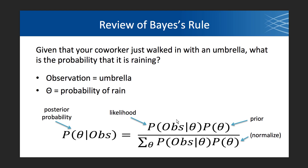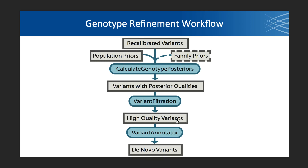We're calculating genotype likelihoods and applying priors from population allele frequencies to inform better genotype posteriors. This workflow starts with recalibrated variants that have been through VQSR. We apply population priors from a resource like 1,000 Genomes. If you have trios, you can also apply family priors by providing a pedigree. That passes through the calculate genotype posteriors tool, which improves posterior probabilities for each genotype and potentially changes some calls. Then we do genotype filtration for high-quality genotypes and can run variant annotator to tag high-confidence de novo mutations.